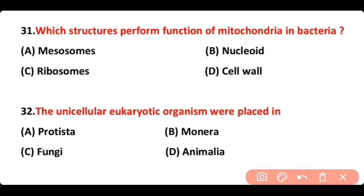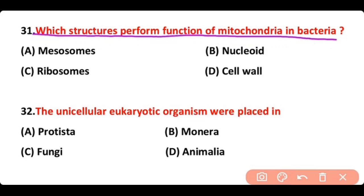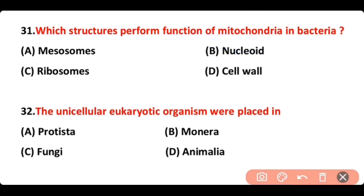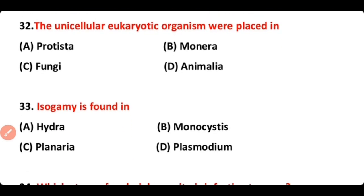Question number 31: Which structure performs the function of mitochondria in bacteria? Options: Mesosome, Nucleoid, Ribosome, Cell Wall. The answer is option A. Mesosome performs the function of mitochondria in the case of bacteria.